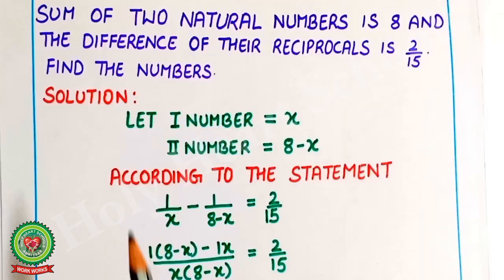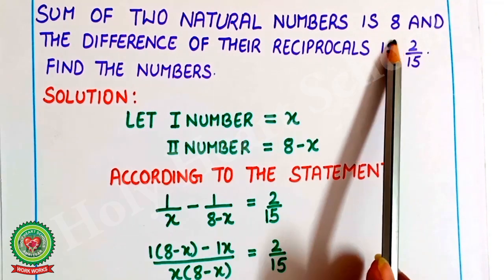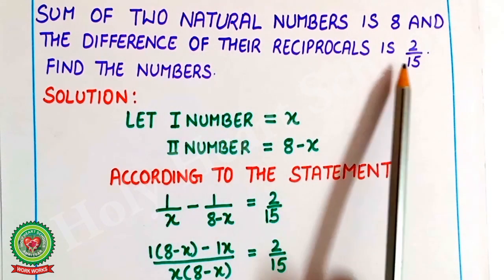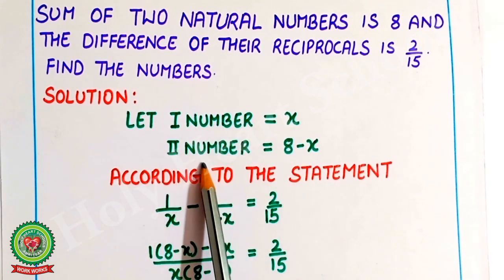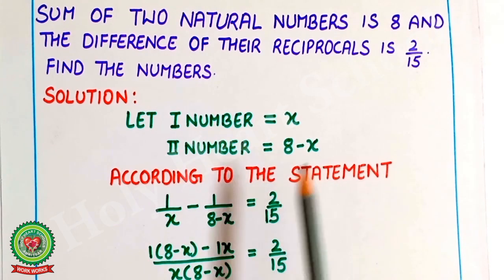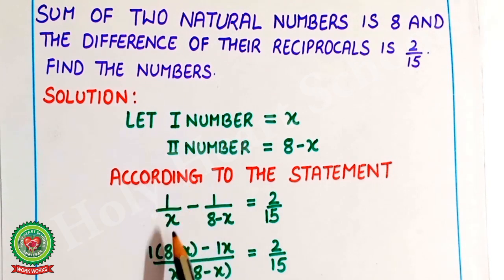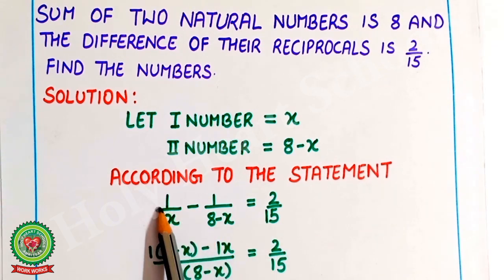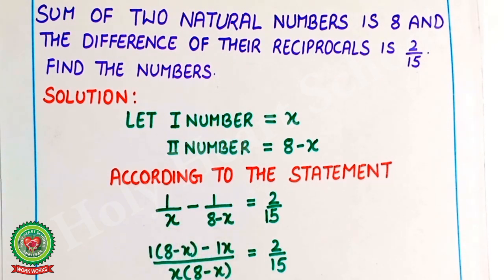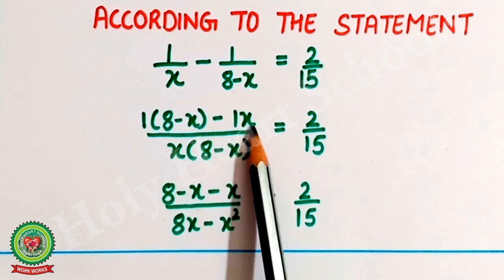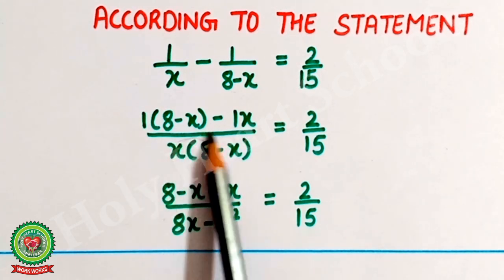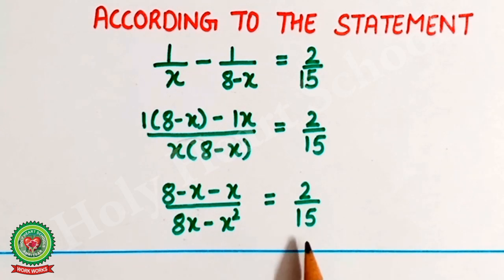Example 2: The sum of two natural numbers is 8 and the difference of their reciprocals is 2 upon 15. Find the numbers. Let the first number equal x and the second number equal 8 minus x. According to the statement: 1 upon x minus 1 upon (8 minus x) equals 2 upon 15. After solving: (8 minus x minus x) upon x(8 minus x) equals 2 upon 15, giving (8 minus 2x) upon (8x minus x squared) equals 2 upon 15.